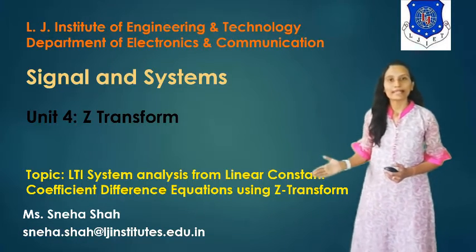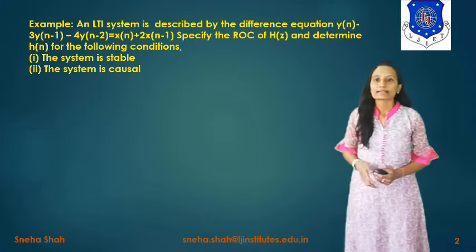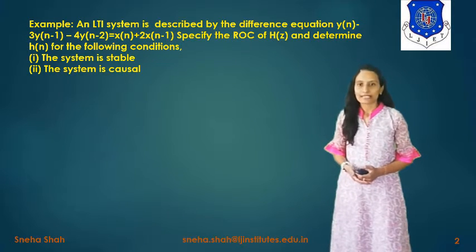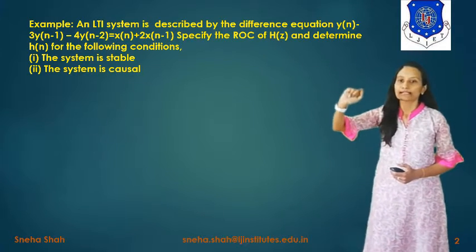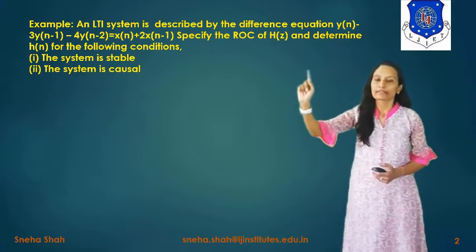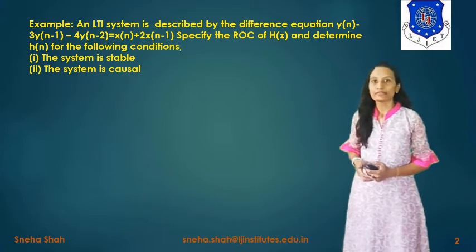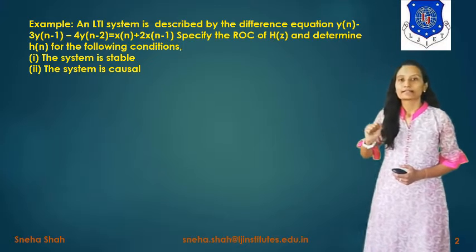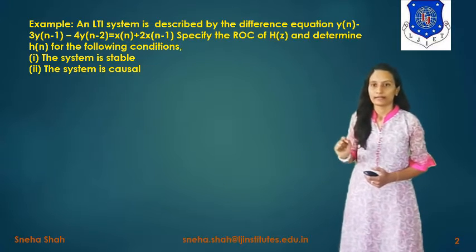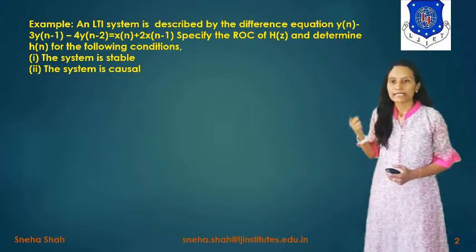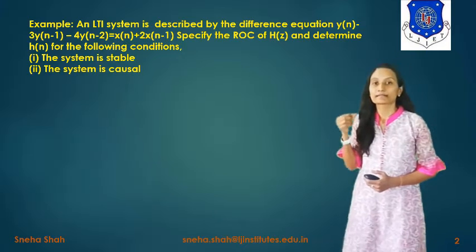This topic can be well explained by some examples. Starting with the first example: an LTI system is described by the difference equation y(n) - 3y(n-1) - 4y(n-2) = x(n) + 2x(n-1). We need to specify the ROC of H(z) and determine h(n). From the difference equation in the form of y(n) and x(n), we have to find H(z) as well as h(n) for the following conditions: the system is stable, and the system is causal.